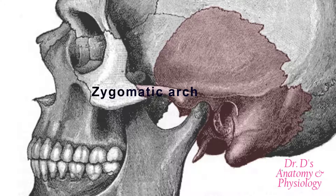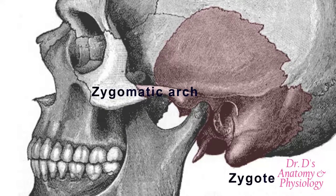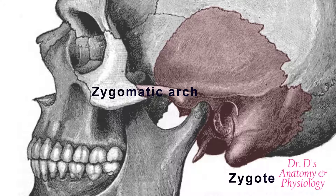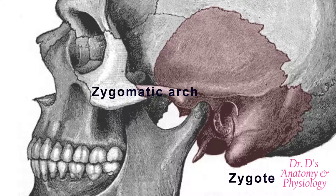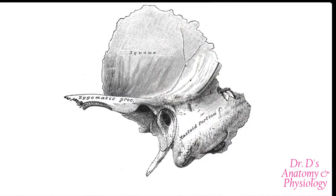The word 'zygomatic' implies a yoking together of two things. You might be familiar with the word 'zygote,' which refers to the union of the male and female sex cells — the word implies a yoking together. Here we are yoking together these two bones to form a zygomatic arch, and that's the reason it's called the zygomatic arch: it's formed from the joining of these two bones.